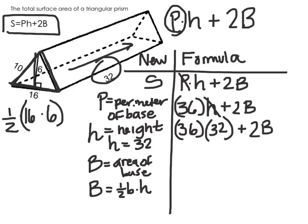Now 16 times 6 is 96, so 1 half of 96. My area of the base is 48.